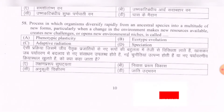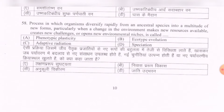Next question: The process in which organisms diversify rapidly from an ancestral species into a multitude of new forms, particularly when a change in the environment makes new resources available, creates new challenges, or opens new environmental niches, is called — options are: phenotypic plasticity, ecotype evolution, adaptive radiation, speciation. The correct option is C — adaptive radiation.